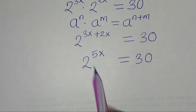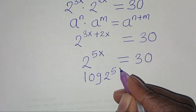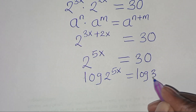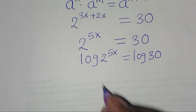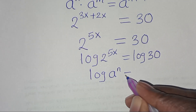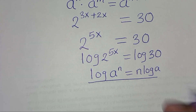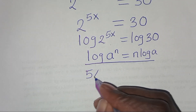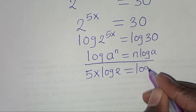To solve for x, we introduce logarithm on both sides. We will have log 2 to the power 5x equal to log 30. The next step is that log 2 to the power 5x is in the form of log a to the power n, which we can express as n times log a. Applying this power rule property, log 2 to the power 5x becomes 5x log 2, equal to log 30.